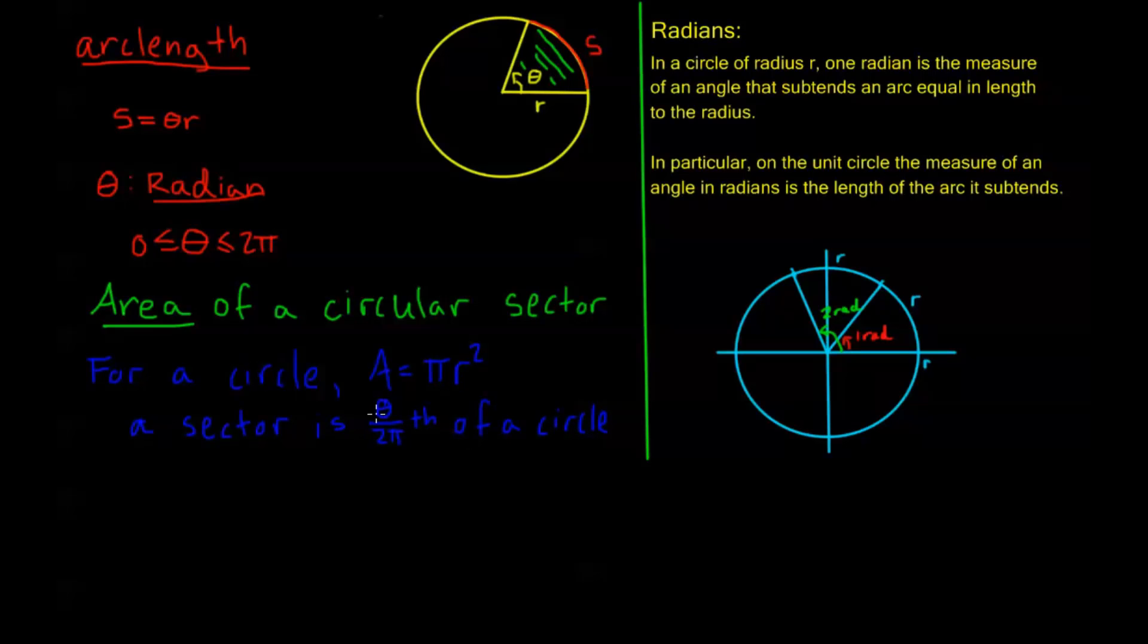In other words, let's say that my theta was an angle of pi exactly, then I would have one half of a circle would be that sector, right? Pi would take me one half the way around the circle, I'd be cutting the circle in half.